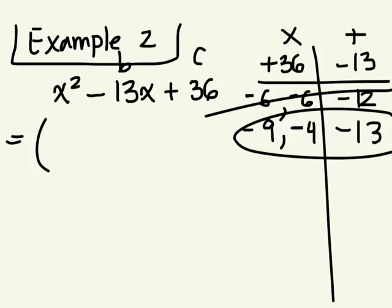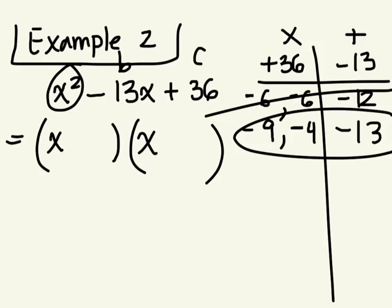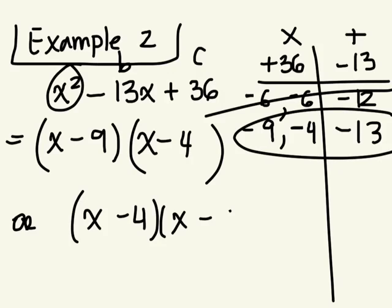To write this in factored form, the first terms are X times X, and the two factors are negative 9 and negative 4. So it's X minus 9 and X minus 4 — or you could write X minus 4 and X minus 9. The order doesn't matter because you're just multiplying.